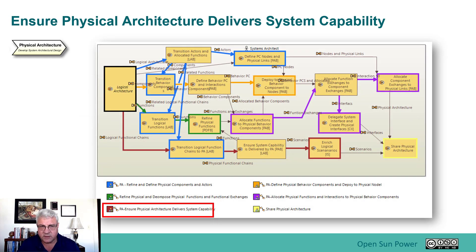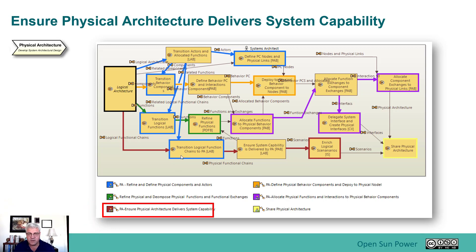In this phase, we're going to focus on a couple of steps, and those steps are focused on this red flow that goes through here. The transitioning has already taken place, but it's still part of this flow of the functional chains from the logical. We're going to basically ensure that the system capability is delivered by the physical architecture. Later in this section, we'll do an optional section on enriching logical scenarios, especially since we're focused on a software-oriented product, and we'll do that in a separate video.